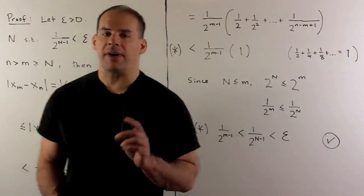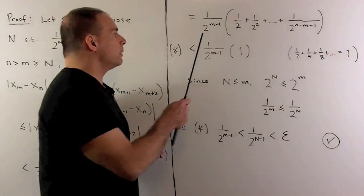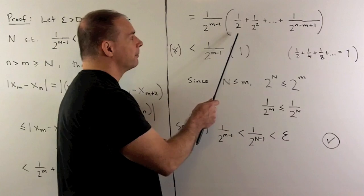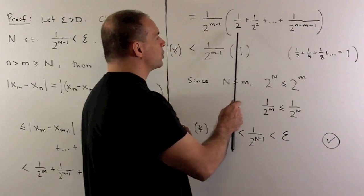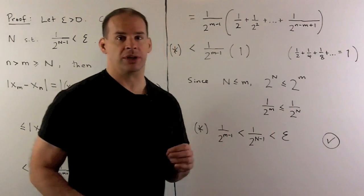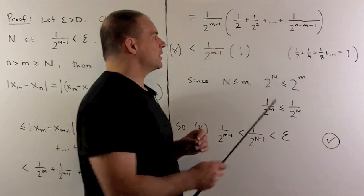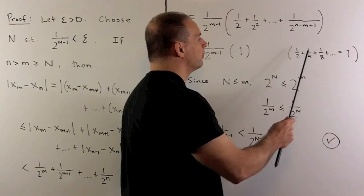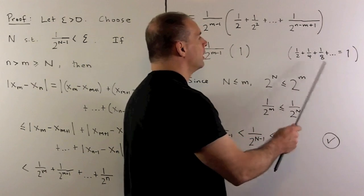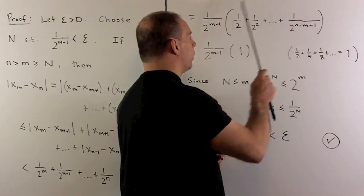Next step, I'll factor out 1/2^{n-1}, which gives me a lead term of one-half. What we have here is a partial sum for a geometric series. If we were to take the sum for the series of all powers, that's going to sum up to one. So this is always going to be less than or equal to one.